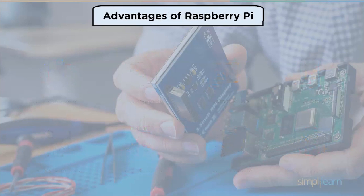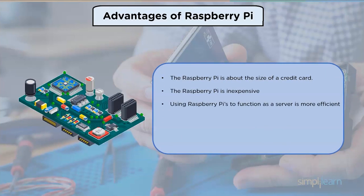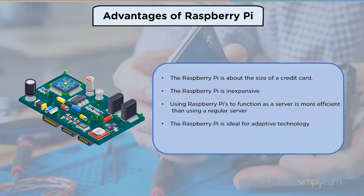Advantages of Raspberry Pi: Raspberry Pi is about the size of a credit card and is inexpensive. Using Raspberry Pi as a server is more efficient than using a regular server. It is ideal for adaptive technology as it can display visuals and play movies. The micro computer can be used by small businesses on a tight budget to use their product or build new technology that integrates the product.